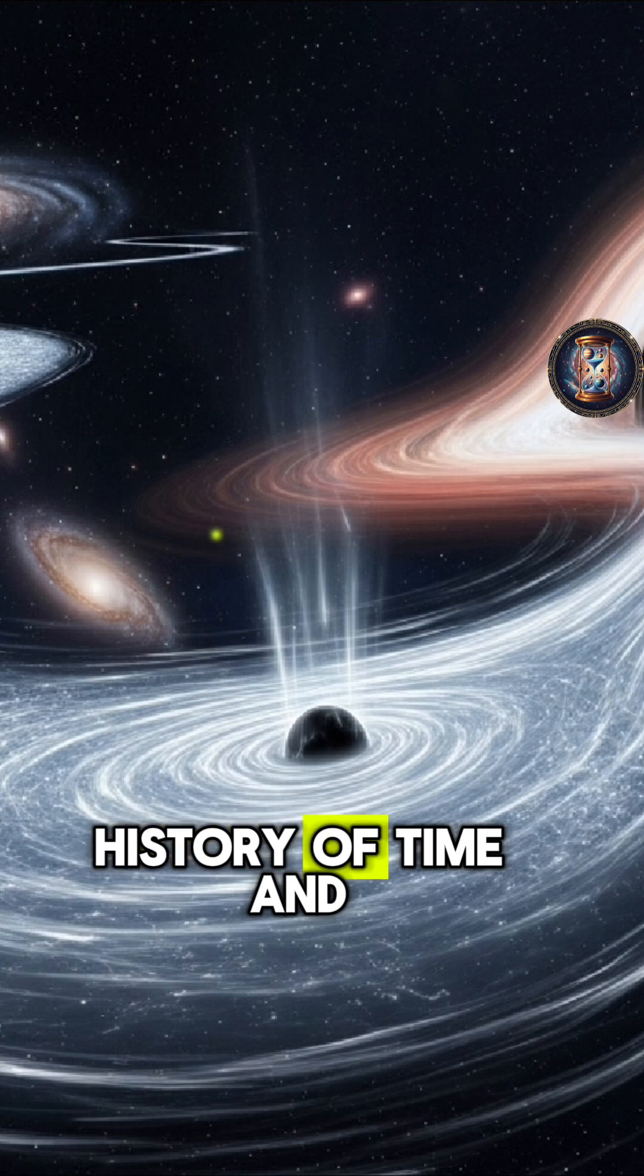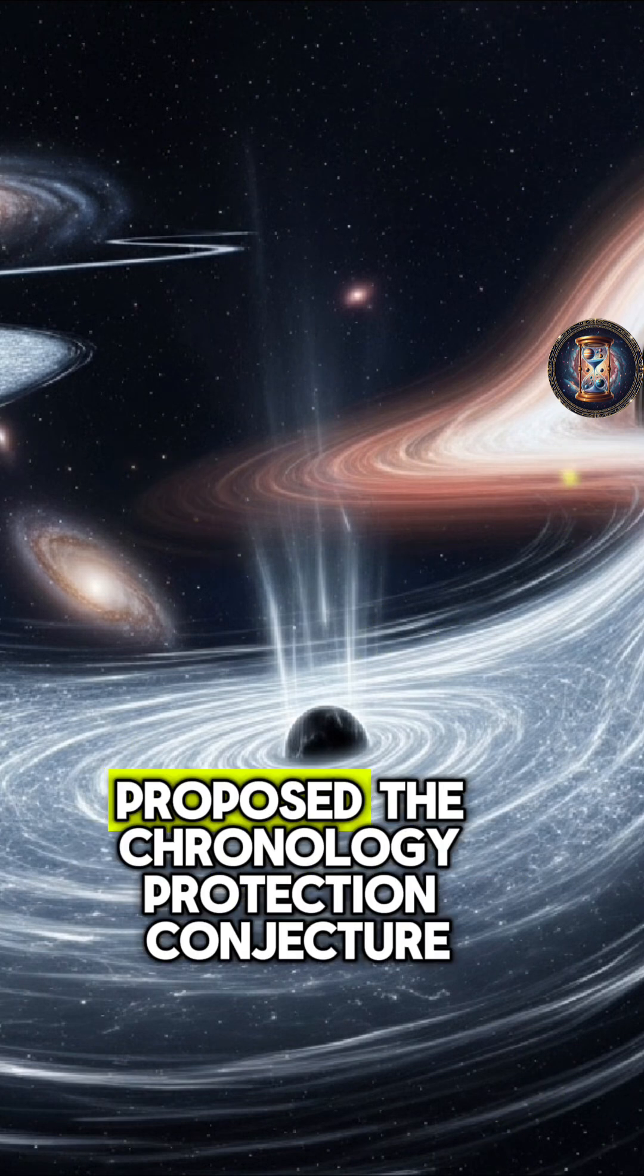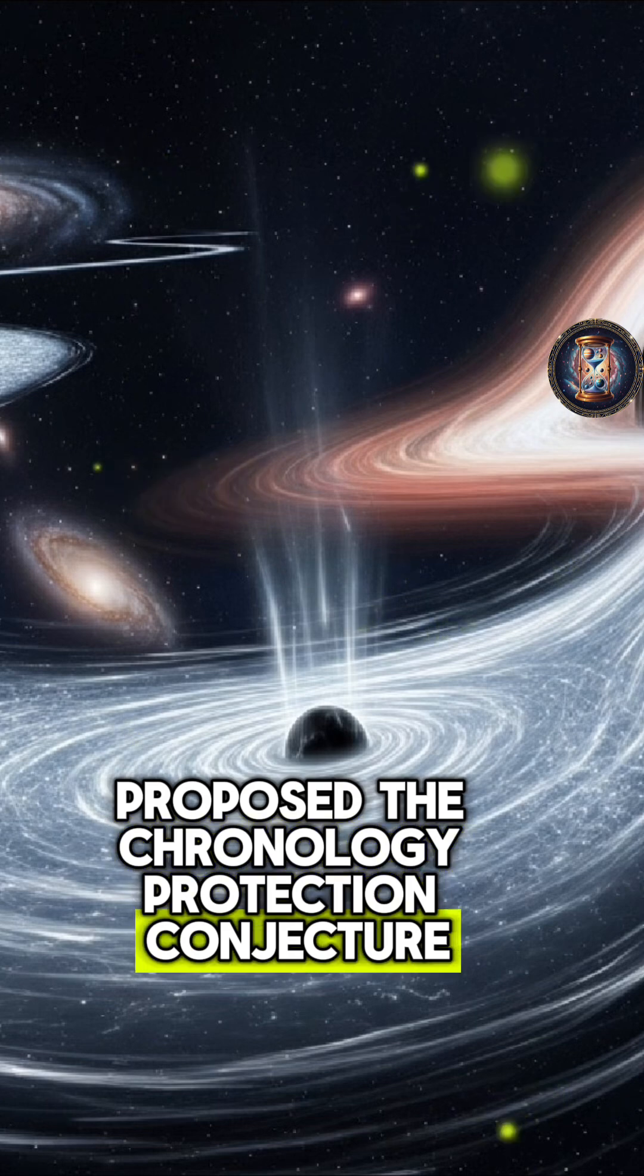Hawking, in A Brief History of Time and The Universe in a Nutshell, proposed the chronology protection conjecture,